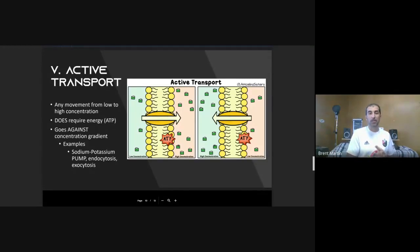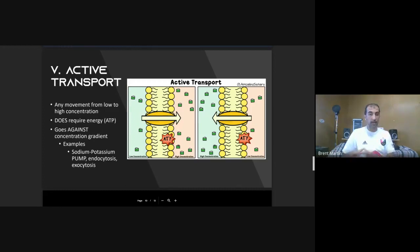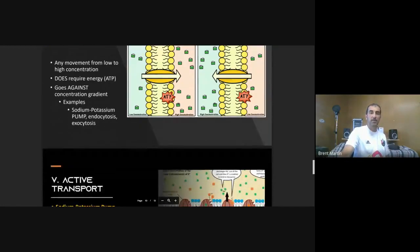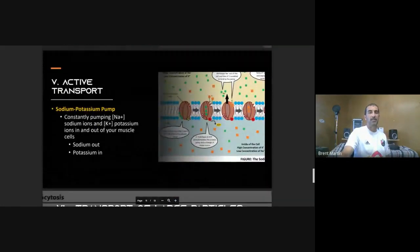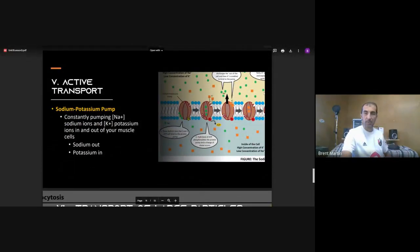Active transport is defined by the opposite three things: it moves molecules from low to high concentration, it requires energy in the form of ATP, and it goes against the concentration gradient. Your biggest example is the sodium-potassium pump, plus endocytosis and exocytosis.